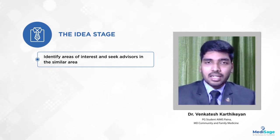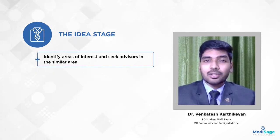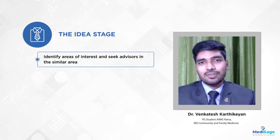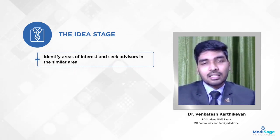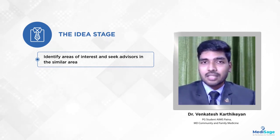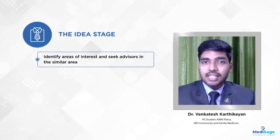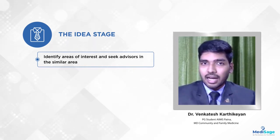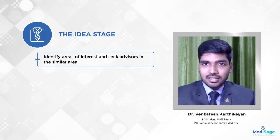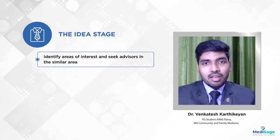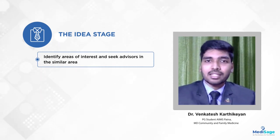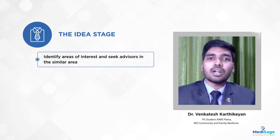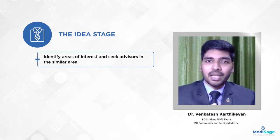Once you are able to identify this area of interest, you should find out what is your guide's area of interest. You need to go through Google Scholar and PubMed, search your guide's name, and see what publications he has made — in which areas your guide has made articles and the areas he's interested in. When the areas of interest for you and your guide match, you can definitely choose your topic in that area.